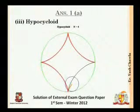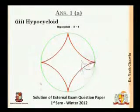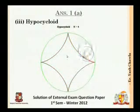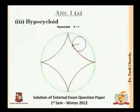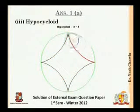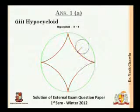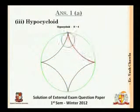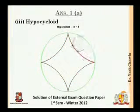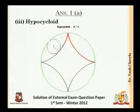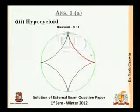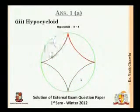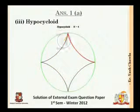The formal definition: a hypocycloid is the curve generated by a point on the circumference of a small circle which rotates without slipping inside another circle. In the animation, the green circle is the bigger one and the blue circle is the smaller one rotating inside it. The reason 'without slipping' is specified is that if it slips, the curve won't be uniform. The point on the blue circle traces the red path — that red figure is the hypocycloid.